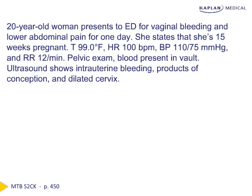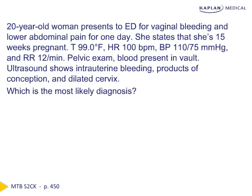We have a woman who says she's 15 weeks pregnant who presents to the emergency department with bleeding and abdominal pain. Her vital signs are stable, and on pelvic exam we see blood in the vault. An ultrasound shows intrauterine bleeding, products of conception, and a dilated cervix. Based on her clinical presentation, exam, and ultrasound findings, we diagnose her with an inevitable abortion.